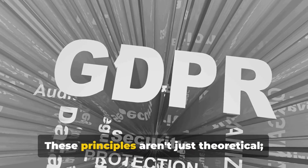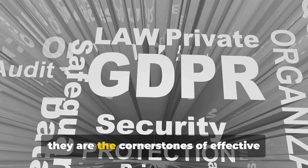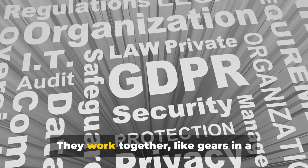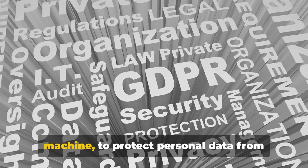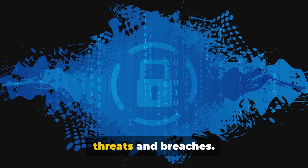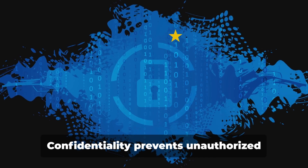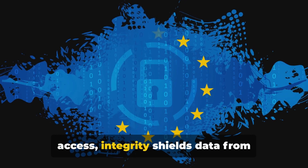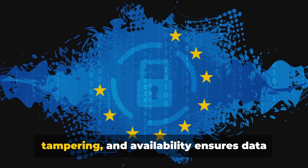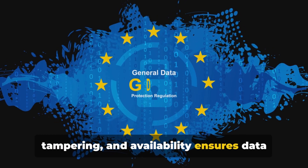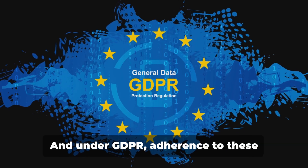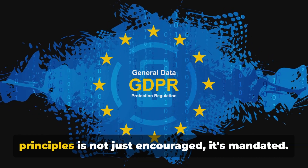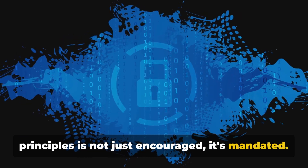These principles aren't just theoretical — they are the cornerstones of effective data security. They work together like gears in a machine to protect personal data from threats and breaches. Confidentiality prevents unauthorised access, integrity shields data from tampering, and availability ensures data can be retrieved when required. Under GDPR, adherence to these principles is not just encouraged — it's mandated.